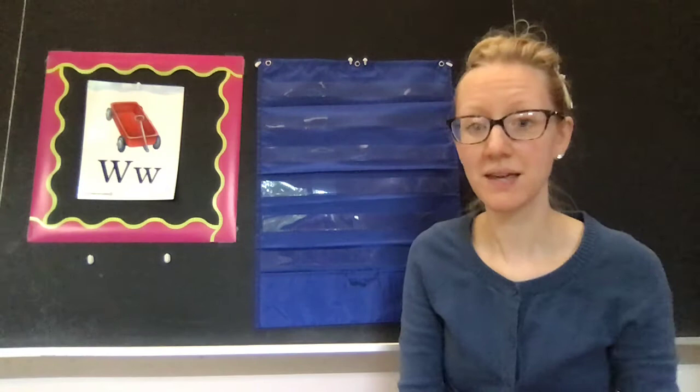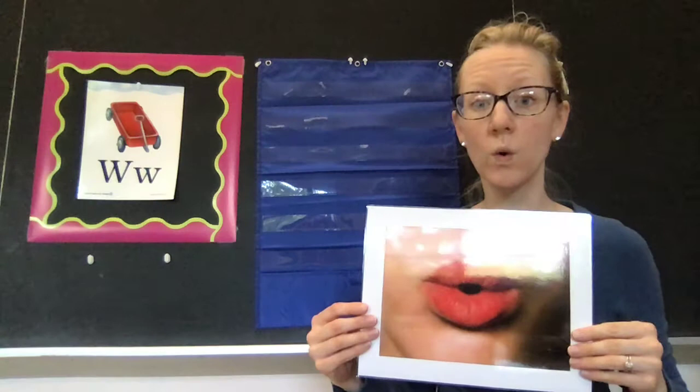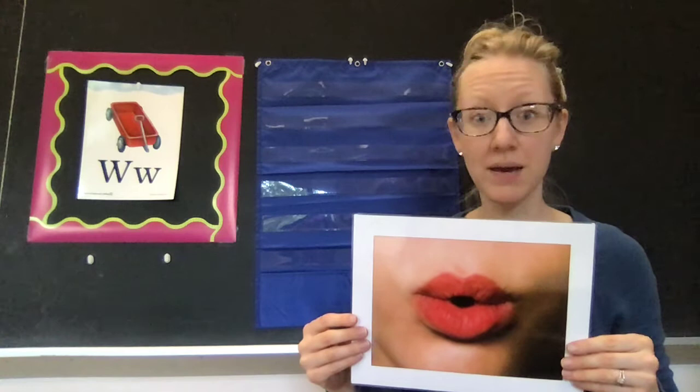To make the sound for W, you're going to round your lips and make a puff of air with your voice turned on. W says wuh, wuh, wuh. Listen one more time. Round your lips, make a puff of air with your voice turned on. W says wuh, wuh, wuh.